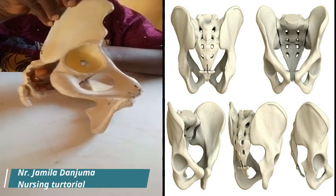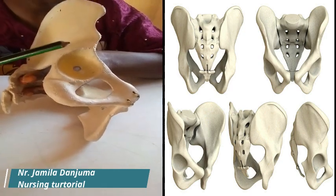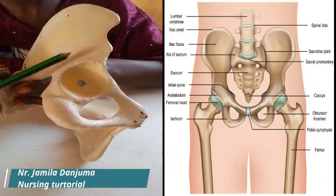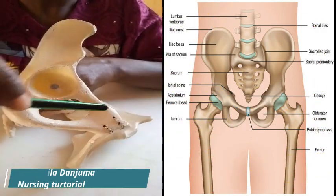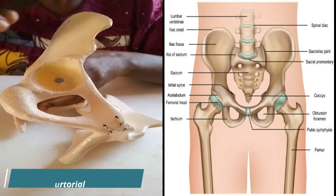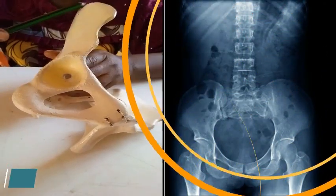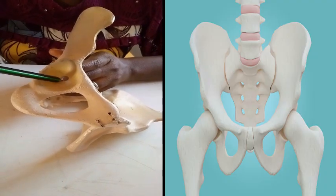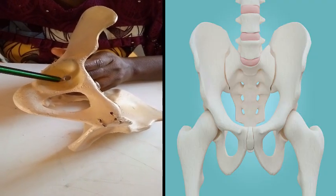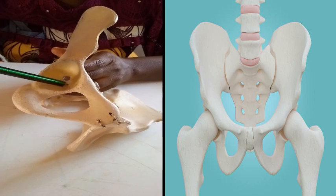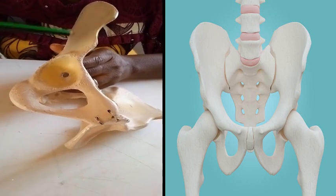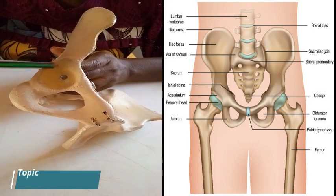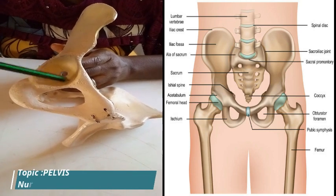Each innominate bone is made up of three bones that are fused together: the ileal, the ischial, and the pubic bone. On its lateral aspect is a large cup-shaped acetabulum, which articulates with the head of the femur. These three bones — the three innominate bones — all participate in forming the acetabulum.